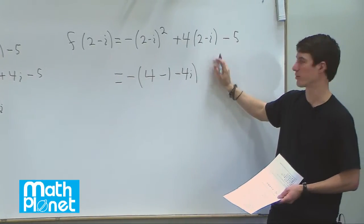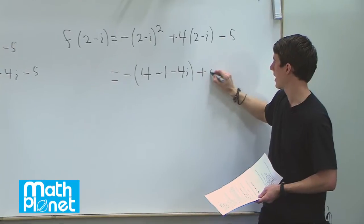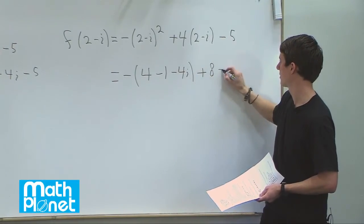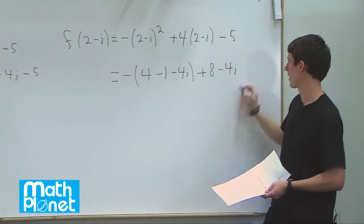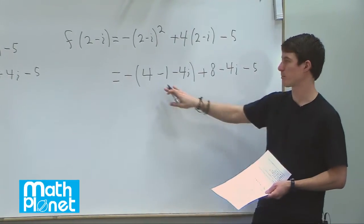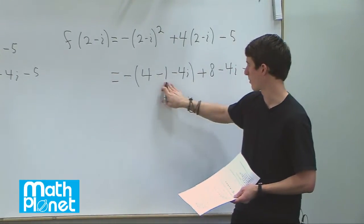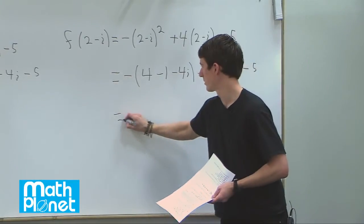And then here we expand this 4 through and we have plus 8, and then we have minus 4i here, and then we still have minus 5. So let's simplify this and see what we get. So 4 minus 1 is 3, so minus 3.